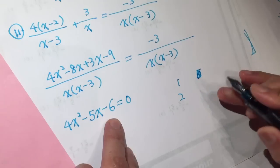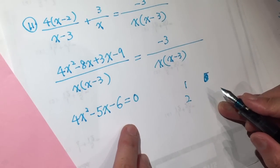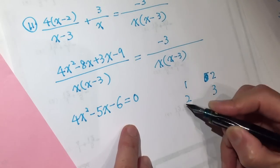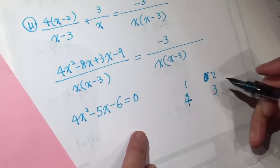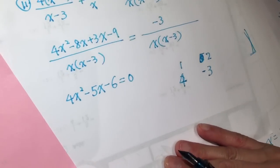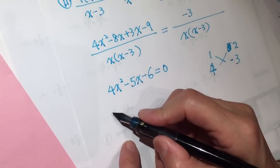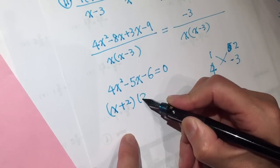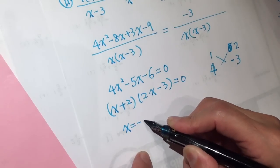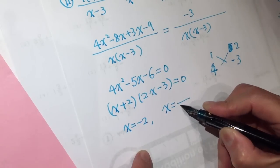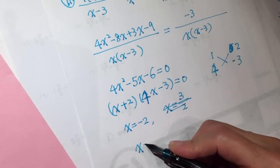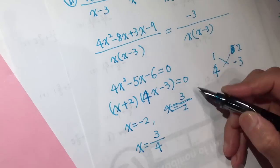No, no — it needs to be negative. Let's do that, sorry. Yeah, we made it. So x plus 2 times 2x minus 3 equals 0: x is negative 2, x is 4 out of 3. Actually x is positive — 2 answers.